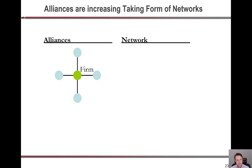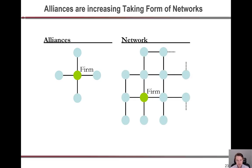Another shift in alliances is that they're now becoming more like networks. Back in the day, there were only a few alliances — a firm connected to some other firms, pretty separate. Now you have networks of firms connected to further-off firms through multiple contractual arrangements, and where a firm sits in that network can make a big difference.